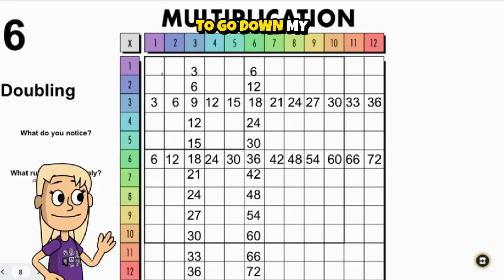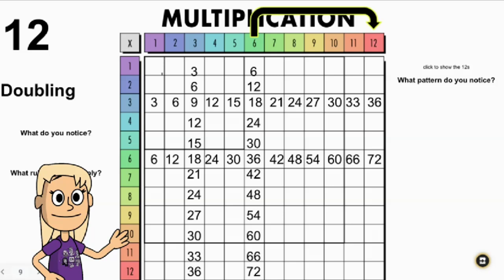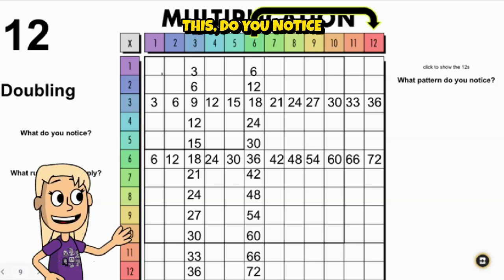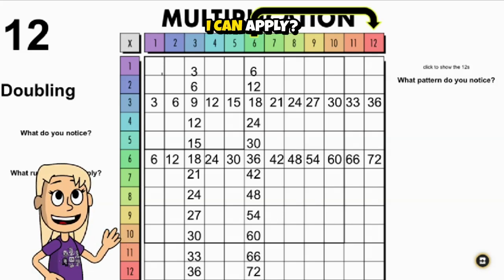So I'm just going to go down my sixes, and I'm going to double every number and put it over on the 12s row. And as I do this, do you notice a pattern? Is there any kind of a rule that I can apply?